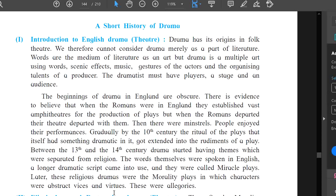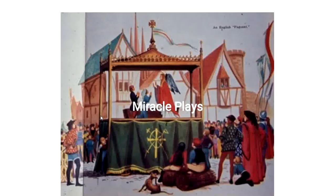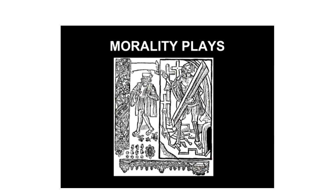Later, the morality plays — in which the characters themselves were a representation of good and bad qualities — were used to teach moral and religious lessons. These plays were known as allegories. So we progressed from miracle plays to morality plays, where characters represented abstract moral qualities.